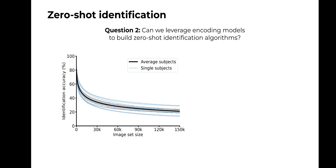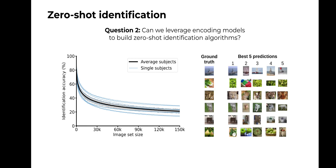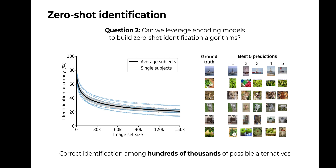These are the results we got. As expected, the identification accuracy monotonically decreases with increasing image set sizes, and is still at 20% with an image set size of 150,000 images. Furthermore, even when an image condition is not correctly identified, our algorithm often selects image conditions that are conceptually and visually similar to the correct one. Therefore, these results show that our algorithm can reliably identify neural data conditions above chance in a zero-shot fashion, even among hundreds of thousands of possible alternatives.